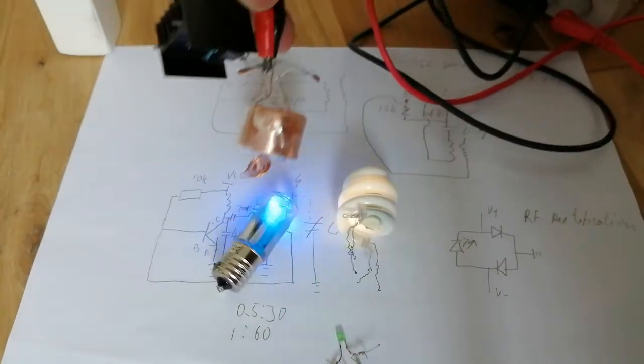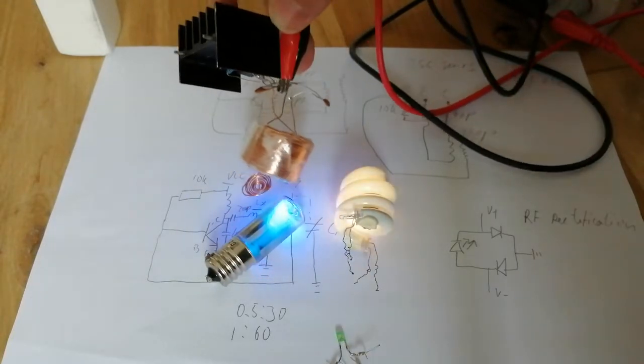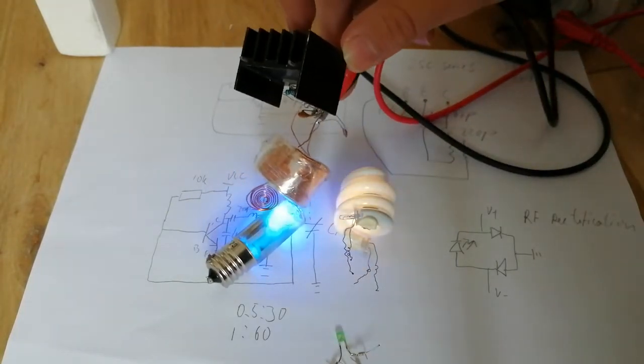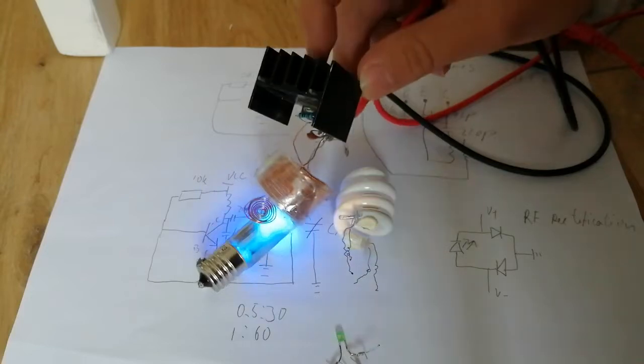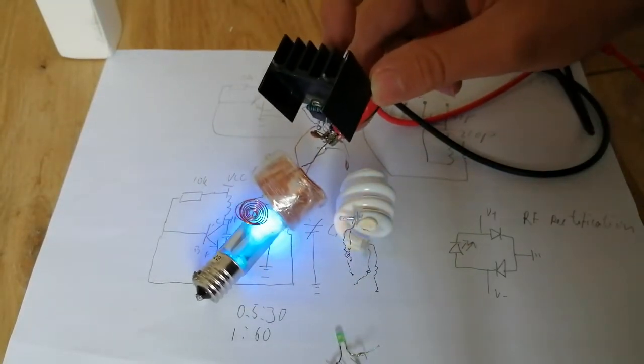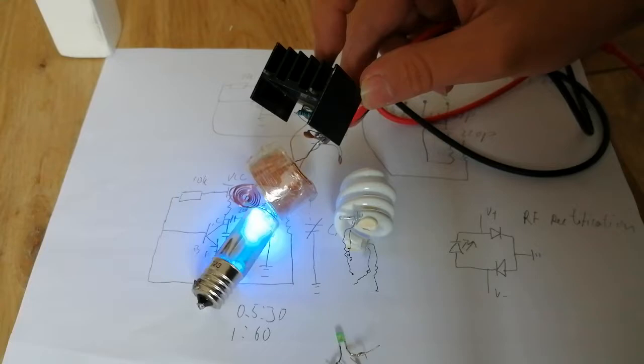And now we can smell the ozone. This bulb itself is broken, the filament blown out and the electrode melts off. But I still managed to light it up since the vacuum is still there.